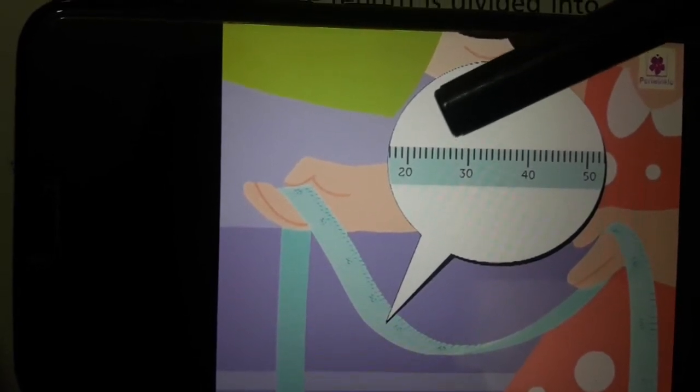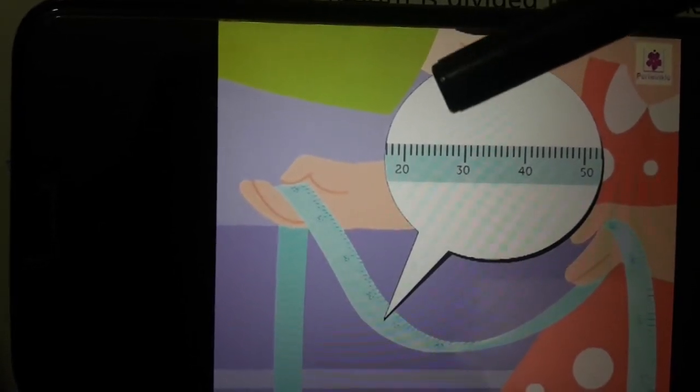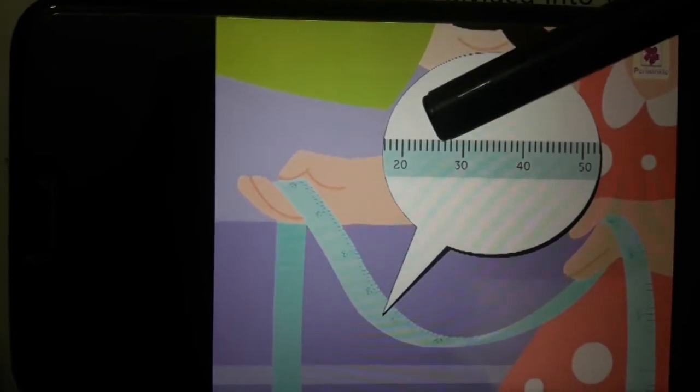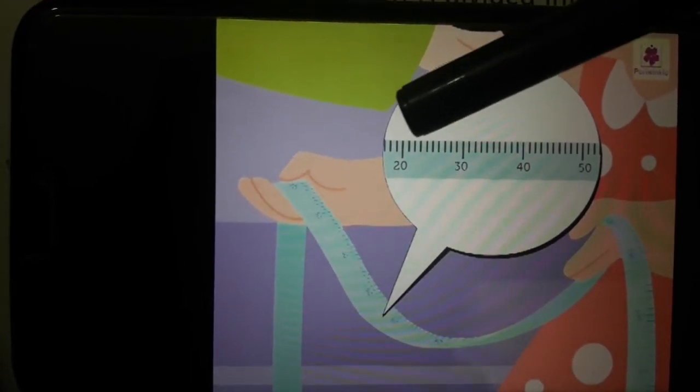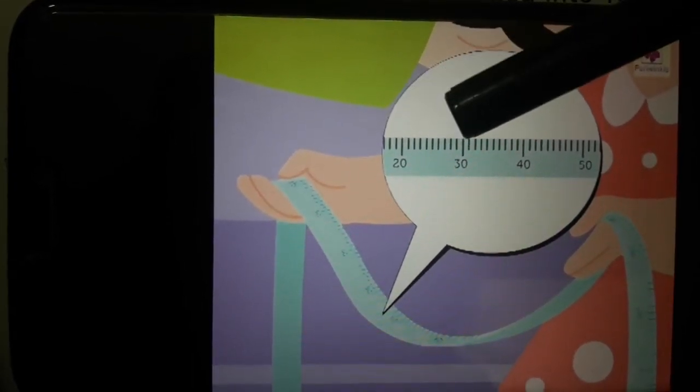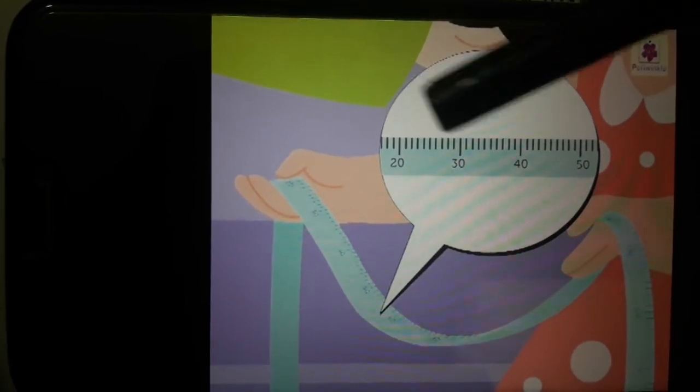The length of a table you can measure with the meters. These are the big lines you can see here. Students, you can see this measuring tape in the hand of a tailor. This is a tailor and he uses this measuring tape to measure the length of cloth.